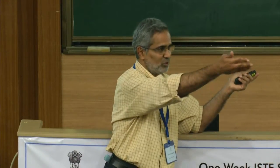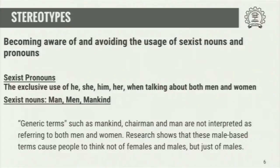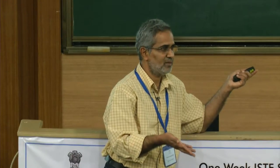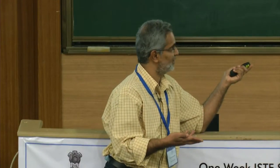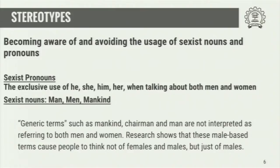One must become aware of when to use gendered pronouns, when not to use them, and when to avoid them altogether. You can use 'he' or 'him' if you know the gender. If you don't know, assuming that person is always male is unfair and stereotypical. When you use only 'he' or only 'she' to refer to both men and women, that is referred to as a sexist pronoun. Similarly, using words like 'mankind,' 'man,' or 'men' to refer to everyone are examples of sexist use of language and stereotyping.